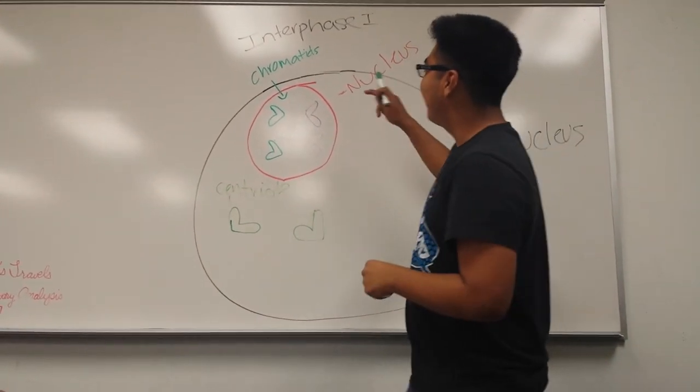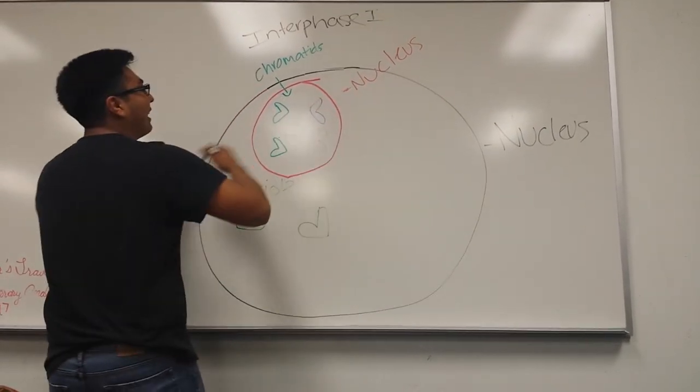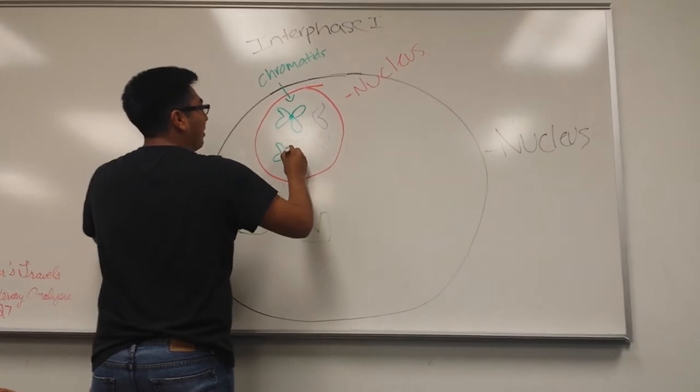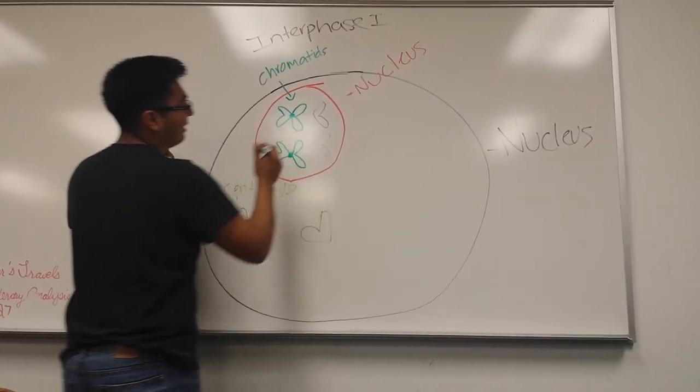During interphase I, the cell replicates its chromatids to form a chromosome, which is held together by a centromere.